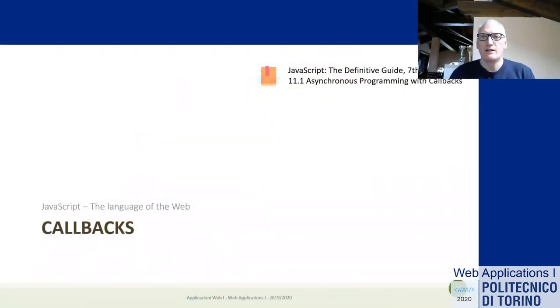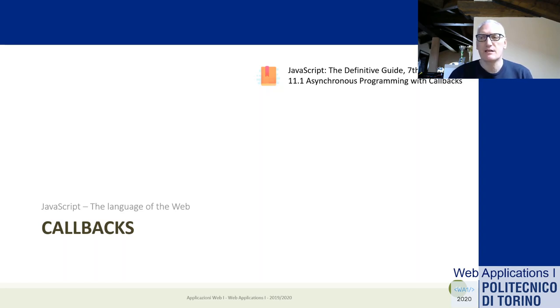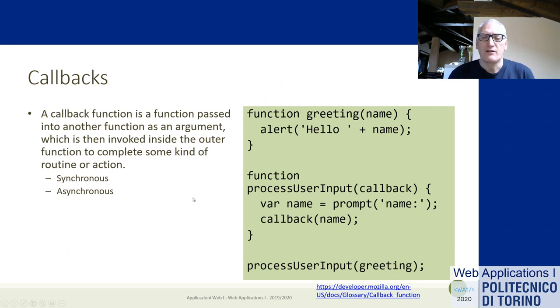We can now complete part two of the JavaScript introduction with two complementary topics. These are easier and less fundamental than the other ones, but will help us understand some practical skills in specific programming tasks. After studying objects and functions — the real core of JavaScript programming — we'll see some details about them. One topic is callbacks, which is the logical consequence of functions being able to be used and passed around as regular objects.